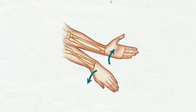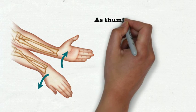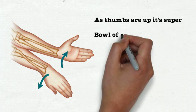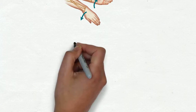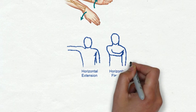Now this one here, we've got pronation where our palms go down or supination as the thumbs up. We call it super or you can remember it as a bowl of soup.